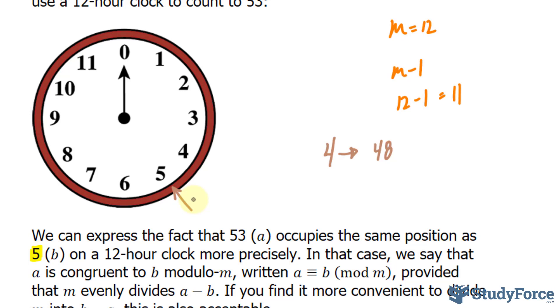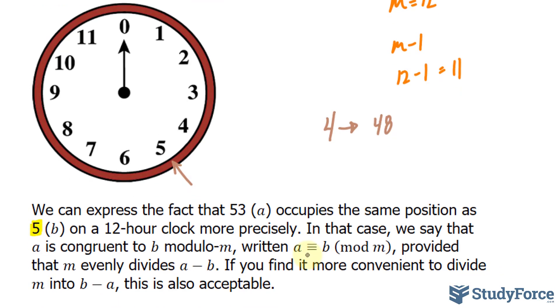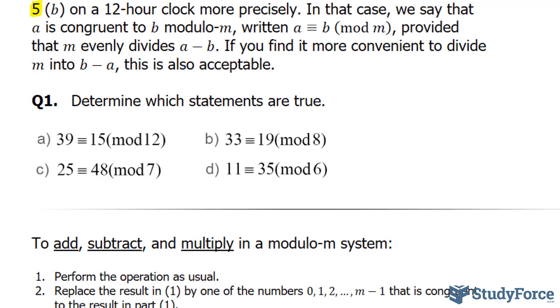So in this case, we say that A is congruent to B in the modulo M system, written as A with these triple bars. Notice also that if I were to subtract five from 53, the difference of 48 is divisible by M, the value 12, which is an indication that 53 and five are congruent. If that was confusing to you, let's take a look at some more examples.